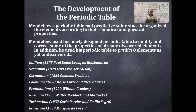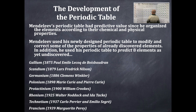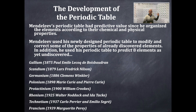Isn't that amazing? Mendeleev predicted eight elements yet undiscovered and helped scientists fine-tune their discoveries. His periodic table had gaps for gallium, scandium, and technetium. Based on those gaps and the periodic table's predictive value — organized by chemical and physical properties — scientists could look for specific properties and from those discover new elements.